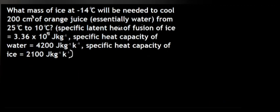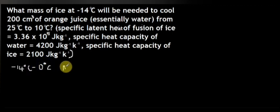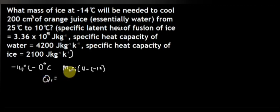When the temperature of ice is raised from minus 14 degrees centigrade to 10 degrees centigrade, it is going to gain heat, and the heat gain is going to occur in three stages. Stage one is the heat required to raise the temperature from minus 14 degrees centigrade to zero degrees centigrade. This is equal to the mass of ice times the specific heat capacity of ice, times the temperature change: zero minus minus 14 degrees.